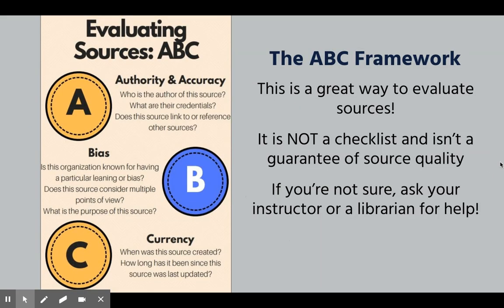The ABC framework — this is probably what we'll work with you most on during the roundtable sessions. A stands for authority and accuracy, B stands for bias, and C stands for currency. When you've found a resource, these are the questions to ask yourself to help you decide whether the source is the kind of quality we're looking for. Be sure to review this — it's on your library guide for CST 105 and was also covered in the Canvas module.